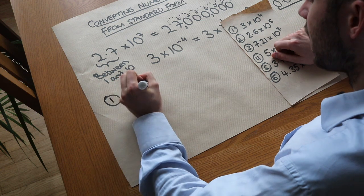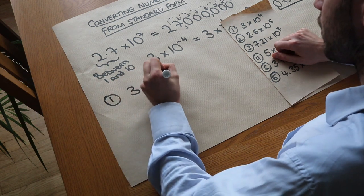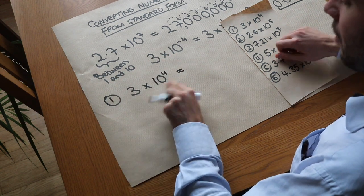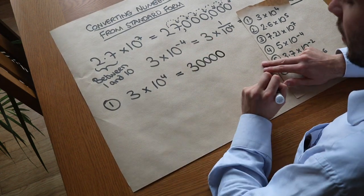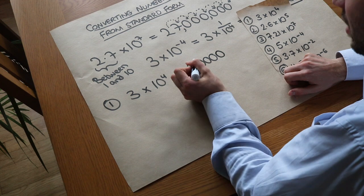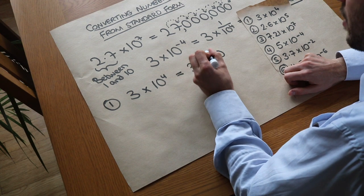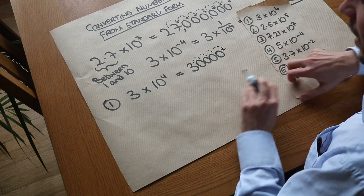We've got question one: 3 times 10 to the 4. So we're multiplying 3 by 10 four times. Well that's just going to have four zeros on the end. And let's just check with the decimal place: move it once, twice, three times, four times. That is right.